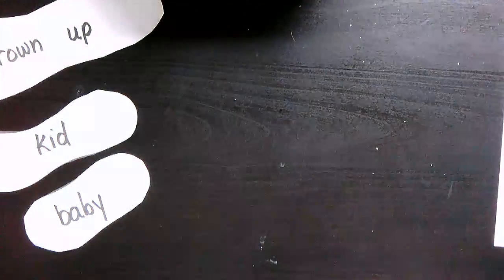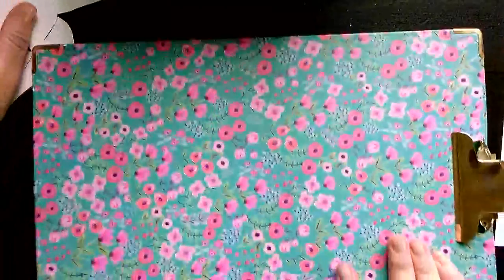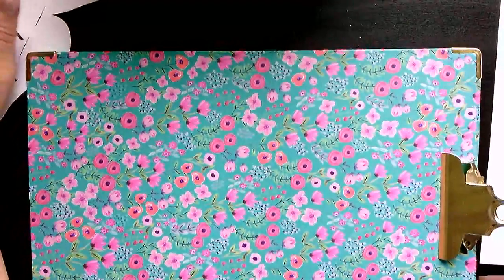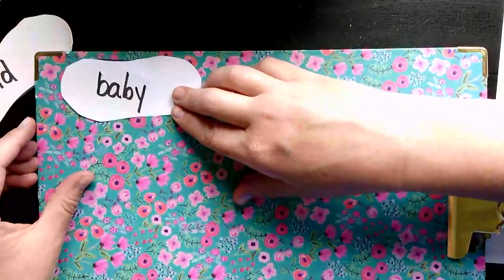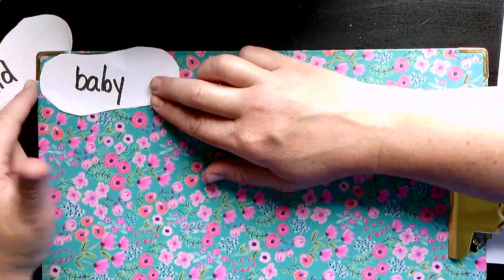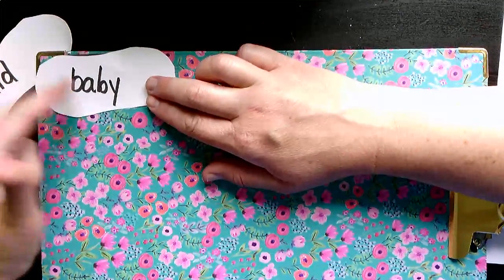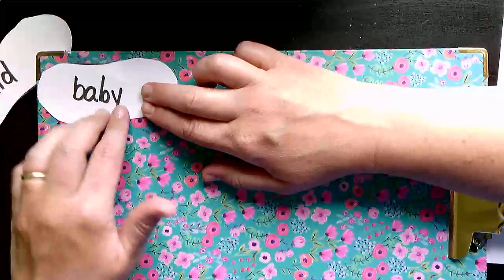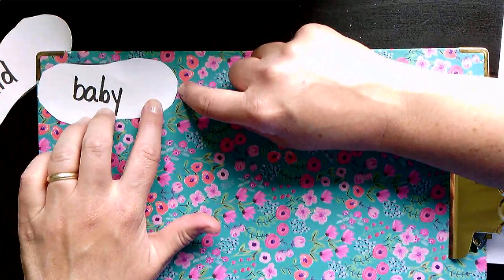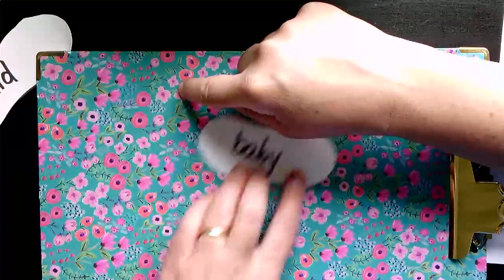And then what we're going to do is we're going to measure some different things. And today I'm going to measure my clipboard. First, I'm going to measure this with my baby shoe. I'm going to start at the very end. Notice I'm not overlapping, and I want to start at the very edge. So I'm going to start there, and I'm going to hold my finger right there where it ends, and then I'm going to move it down.